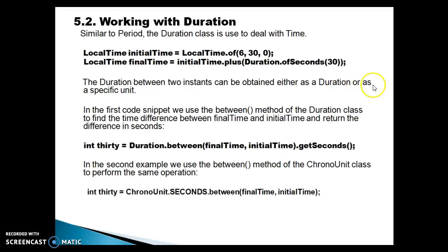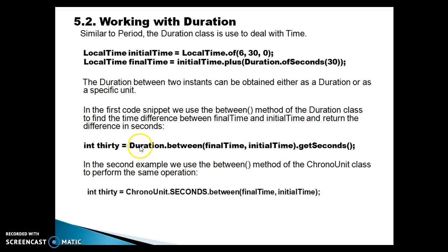The duration between two instances can be obtained either as a Duration or as a specific unit. In the first code snippet, we use the 'between' method of the Duration class to find the time difference between the final time and initial time. It returns the difference in seconds — we have the Duration class with the 'between' method, passing final time and initial time.